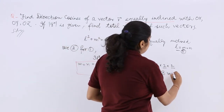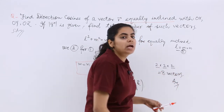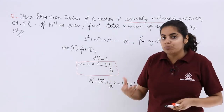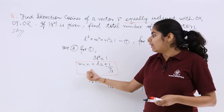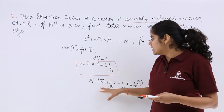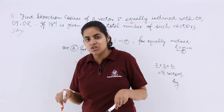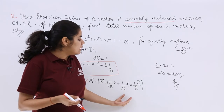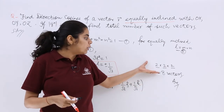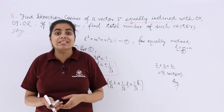Hence, 8 possible vectors are the answer. To recap: the two relations brought us to find L, M, N — they were all equal. Then using the important relation between a vector, its magnitude, and its unit vector, and since we wanted to know about more such vectors, the total number of vectors from permutation and combination is 8.